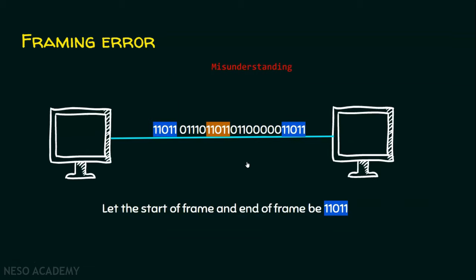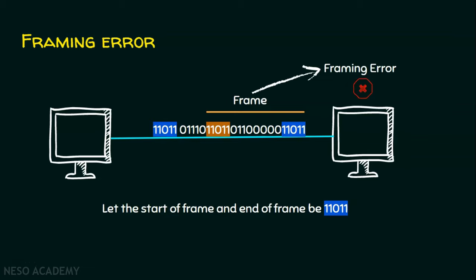When the receiver computer receives this information, the adapter receives continuous zeros and ones. Whenever it receives 11011, it thinks that's the start of the frame. It treats the following 00000 as data, and when it receives the next 11011, it thinks that's the end of the frame — constructing a frame that was not what the sender created. This is what we call a framing error. The same bit sequence can appear in the payload, and this framing error has to be handled. We will see in upcoming lectures how framing errors are handled in protocols.